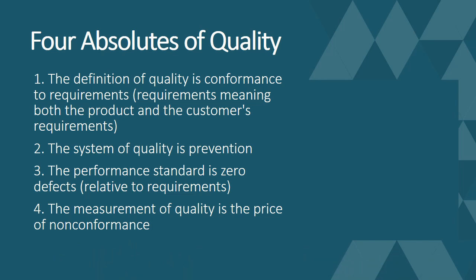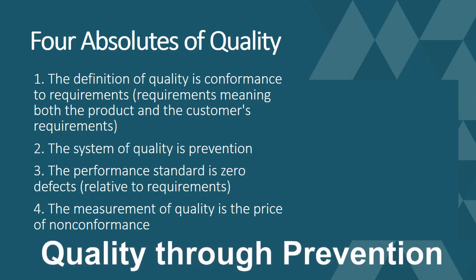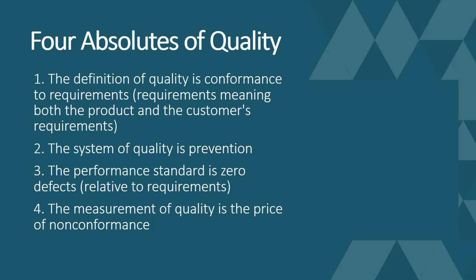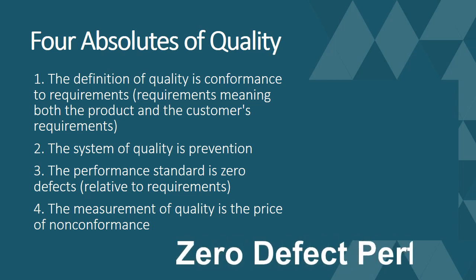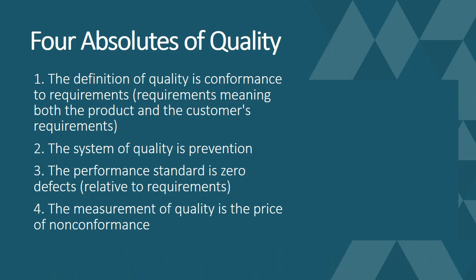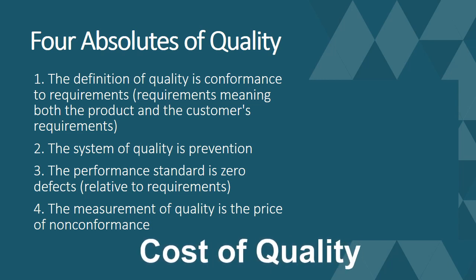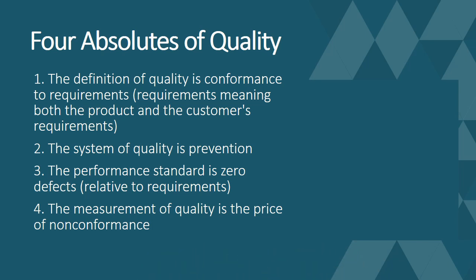The second absolute of quality is that the system of quality is prevention, not inspection. Rather than inspecting quality into the product, emphasis should be on prevention. The third absolute is that the performance standard is zero defect — Crosby was of the opinion that we should be targeting zero defect only, with no acceptable level of defects. The fourth absolute is that the measurement of quality is the price of non-conformance — the cost of quality is what measures the quality.